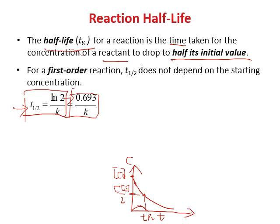Half-life can be easily measured by experiments, and therefore k can be calculated. Whenever you have half-life, you know the rate constant. But remember, this is only for first-order reactions. If it's zero-order or second-order reactions, the half-life depends on the concentration, and we use other equations to calculate half-life for those reactions.